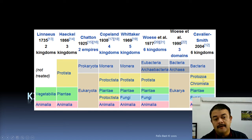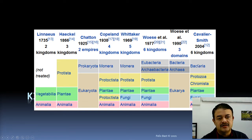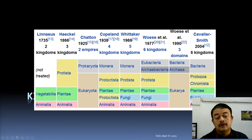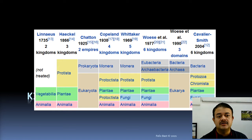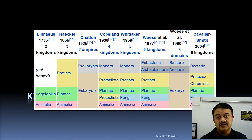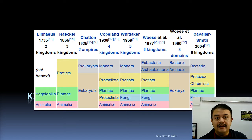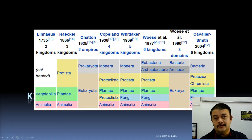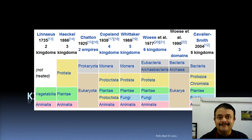Currently, we use Cavalier Smith's Six Kingdoms combined with Carl Woese's three domains. Inside domain Eukarya, there are at least five kingdoms. The domains Bacteria and Archaea together form one kingdom, Bacteria. Then Protozoa, Chromista, Plantae, Fungi, and Animalia. Chromista — which includes diatoms and brown algae — was erected as a separate kingdom by Cavalier Smith, who was a protozoologist working on chromists. This reflects a similar confirmation bias to that of Carl Woese with archaebacteria.